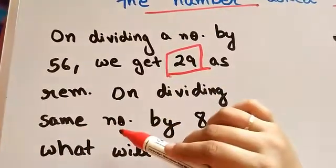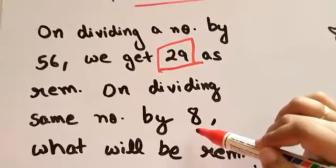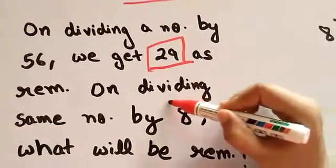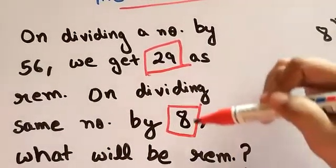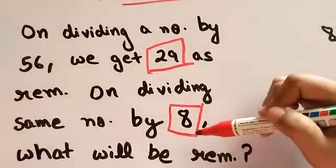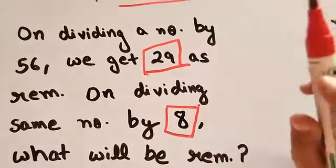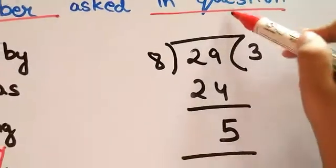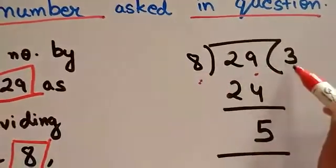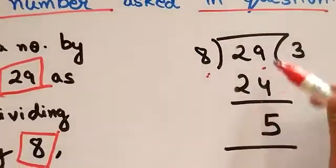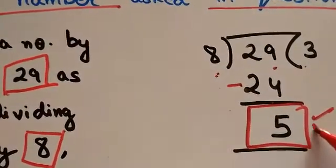On dividing the same number by 8 — this is the number which is asked in our question — what will be the remainder? So just divide 29 by 8. 8 times 3 is 24. 29 minus 24 is 5, and this is your answer.